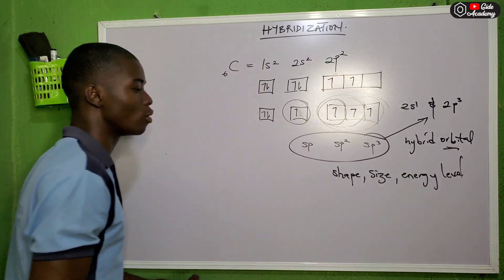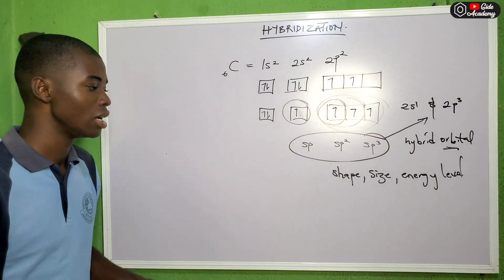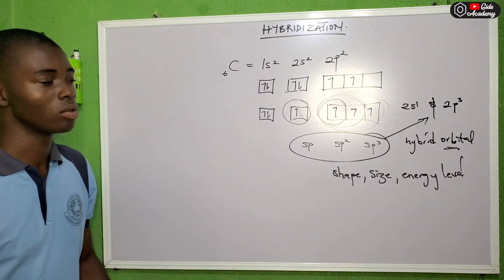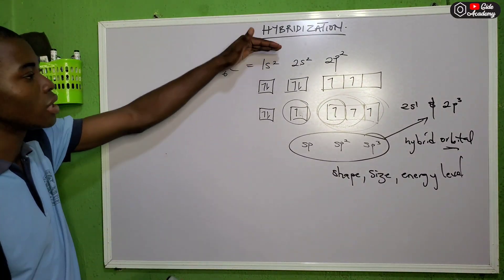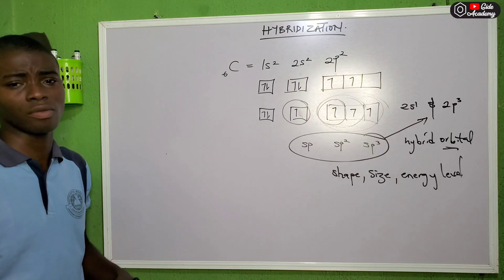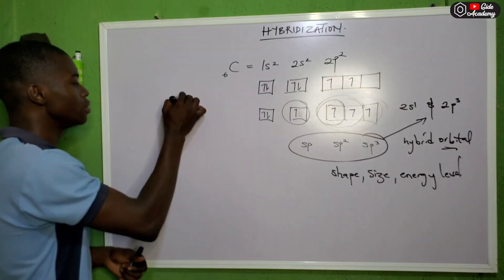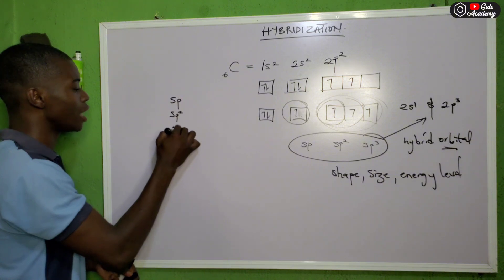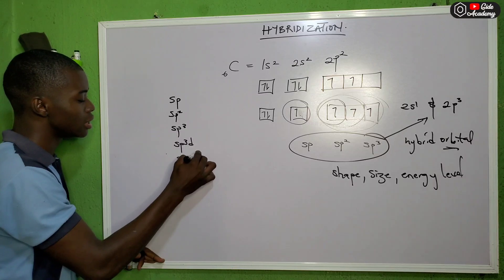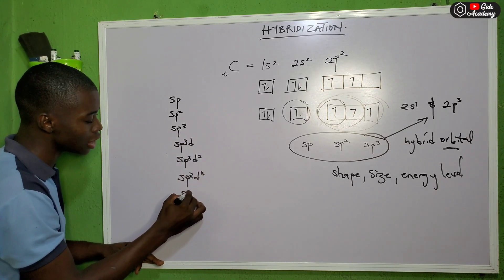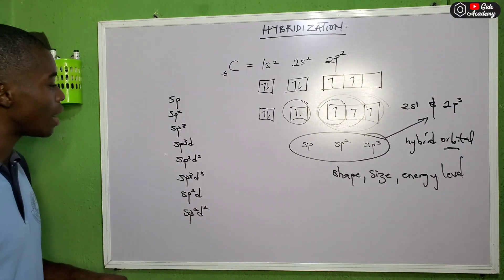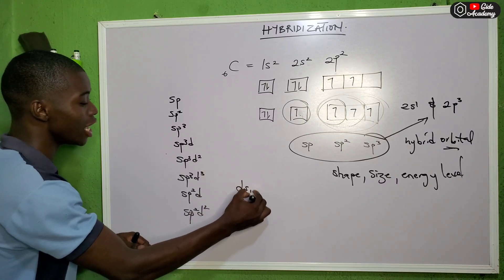The new hybrid orbital formed has similar shape, size, and energy level compared to the initial orbitals that were blended. There are many types of hybridization: sp, sp2, sp3, sp3d, sp3d2, sp3d3, and sp2d, among others.